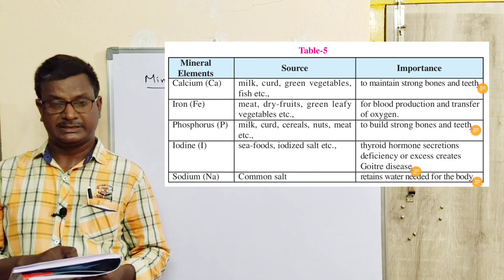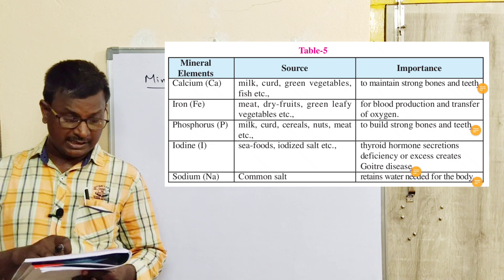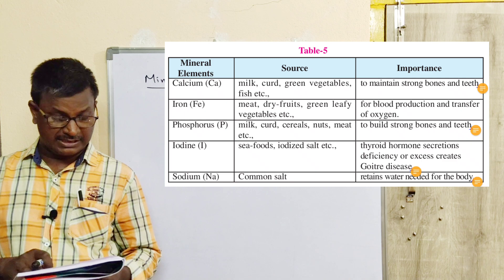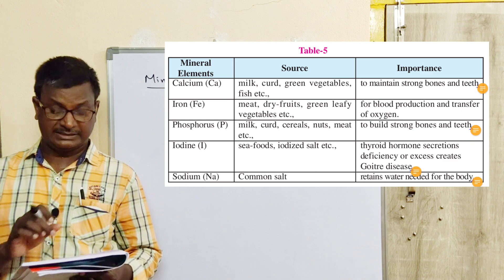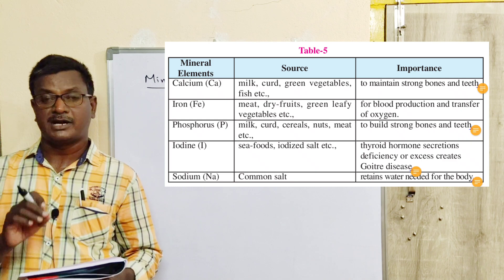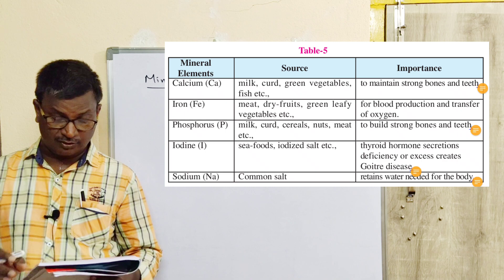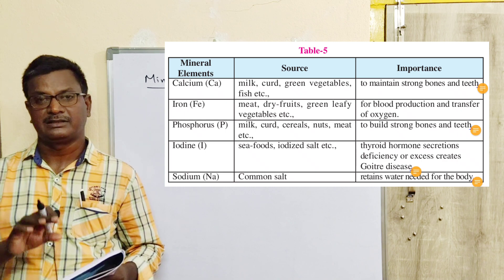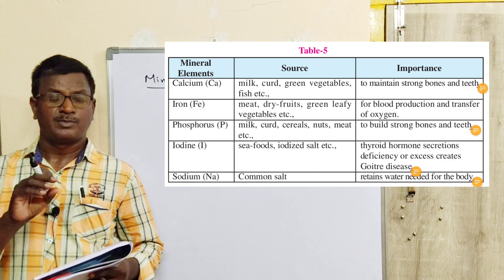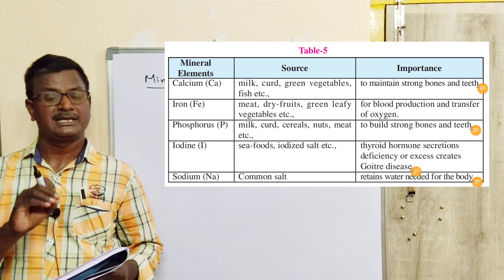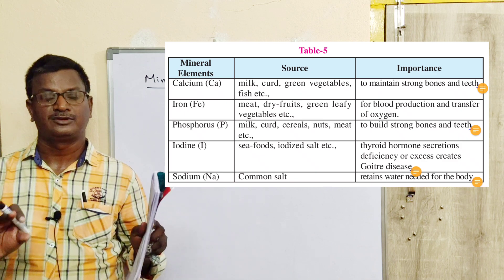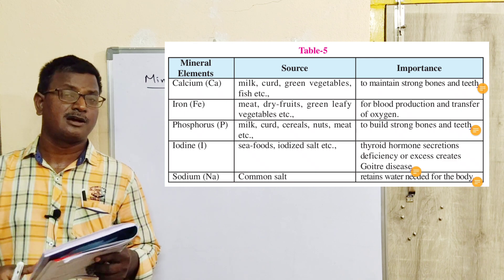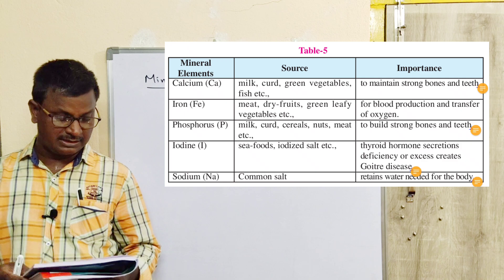Phosphorus sources: milk, curd, cereals, nuts, and meat. Importance: to build strong bones and teeth. Both phosphorus and calcium are available in bones and teeth — calcium phosphate and magnesium phosphate are the main components of bones and teeth.